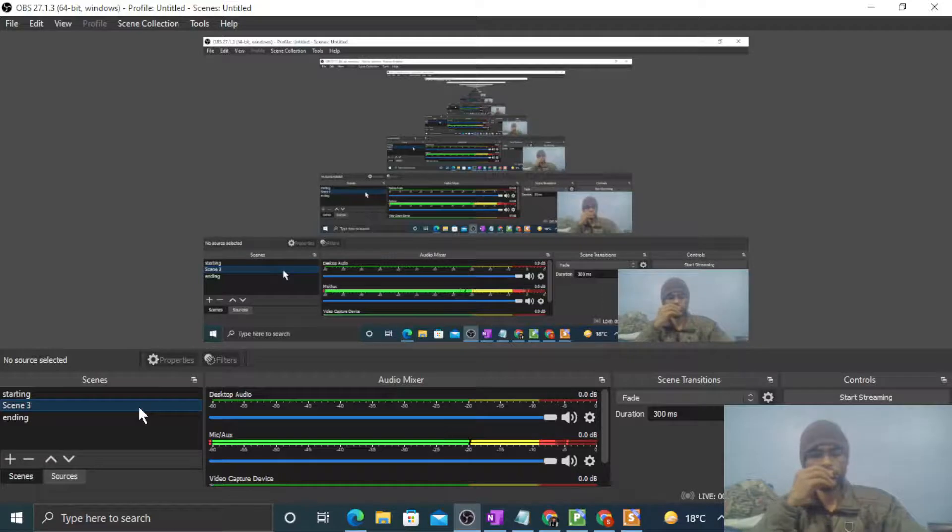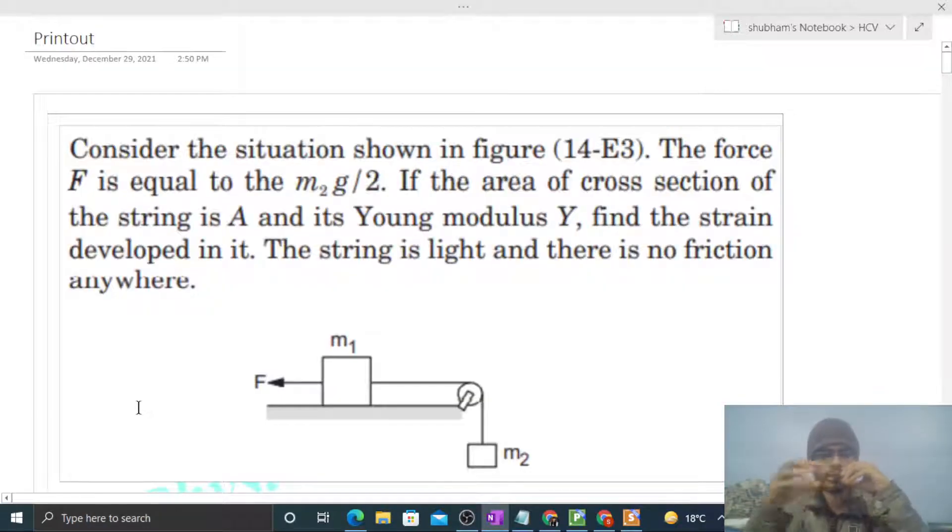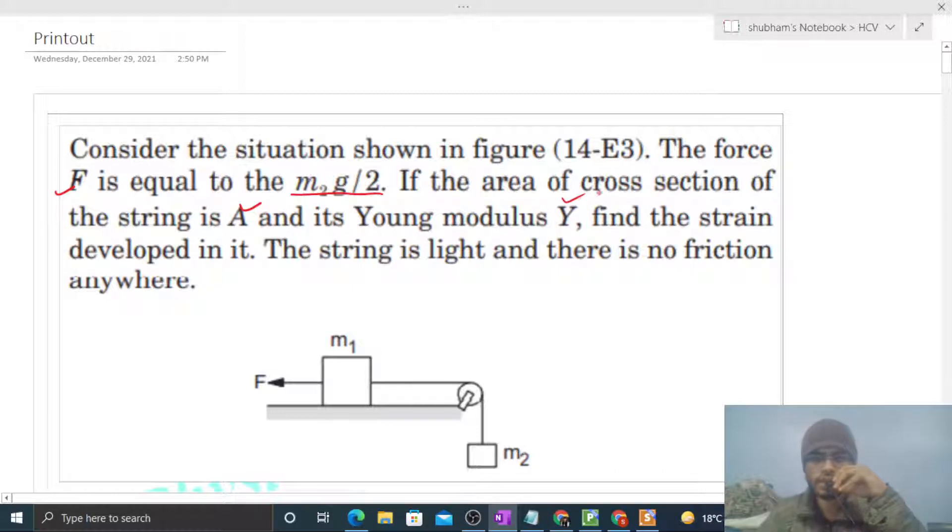Okay, hi everyone. So today let's discuss one interesting problem. It says consider the situation shown in the figure. The force F is equal to m2g by 2. If the area of cross-section of the string is A and its Young's modulus is Y, find the strain developed in it. The string is light and there is no friction anywhere.